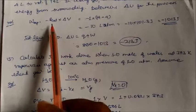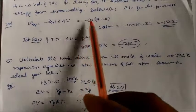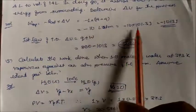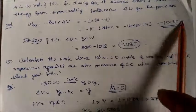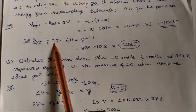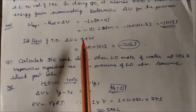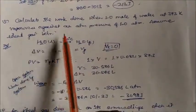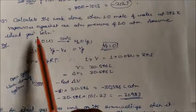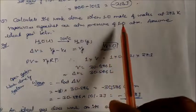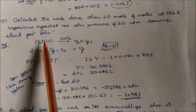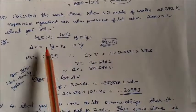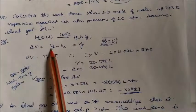Numerical problems. Problem 1: 100 calories of heat are added to a system and 50 calories of work is done on the system. ΔU = q + w = 100 + 50 = 150 calories. If instead 50 calories of work is done by the system on the surroundings, ΔU = 100 − 50 = 50 calories (work done by system is negative).